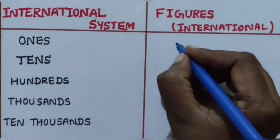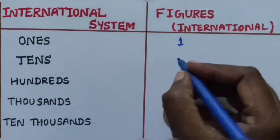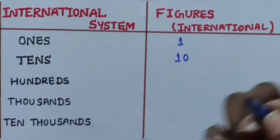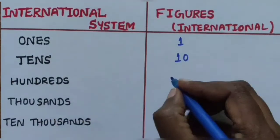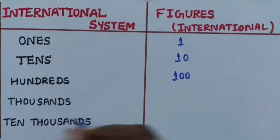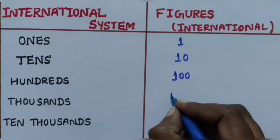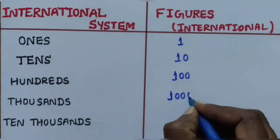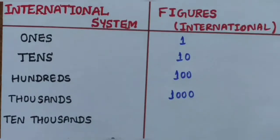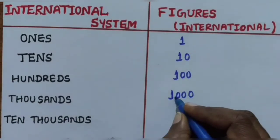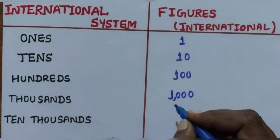In the International System: Ones is simply 1. Tens is 10 (one, zero). Hundreds is 100 (one, zero, zero). And Thousands is 1,000 (one, zero, zero, zero). The commas are used to mark thousands.